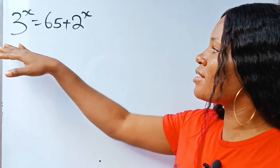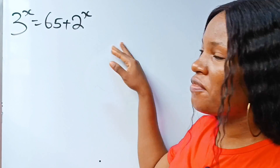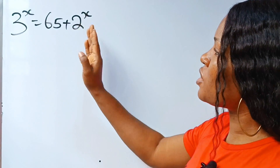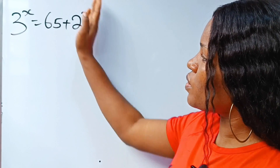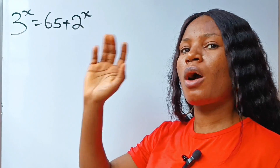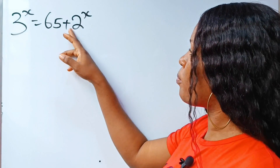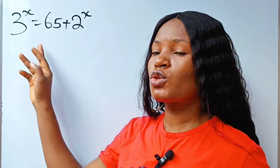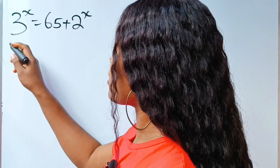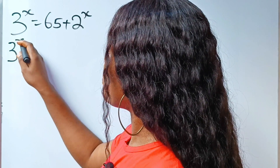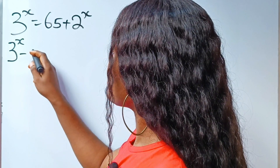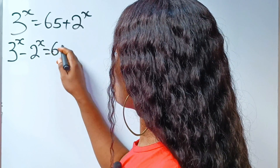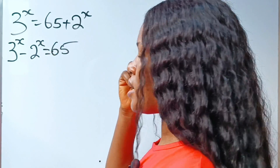Lovely fans, let's quickly solve for the value of x. First, let's transfer this to the other side of the equation. And when we do that, plus 2 to the power of x becomes minus 2 to the power of x. So we have 3 to the power of x minus 2 to the power of x is equal to 65.